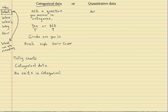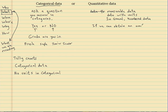So quantitative data is measurable data. Data with units. In general, number data. I'm giving you all characteristics of these. If you get a data set, if we can obtain an average, that would be quantitative data. It's measurable.